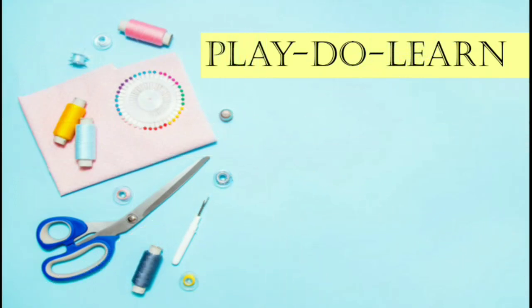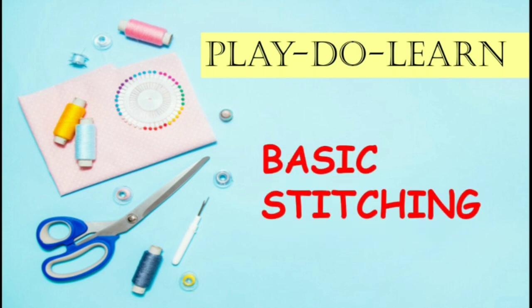Good morning children. Once again we have Play to Learn as a subject, and the topic we are going to do today is basic stitching. The last topic we had done in Play to Learn was how cloth is made from cotton, that is from the cotton plant. Today we shall learn about the different types of cloth and what can be made using that cloth.